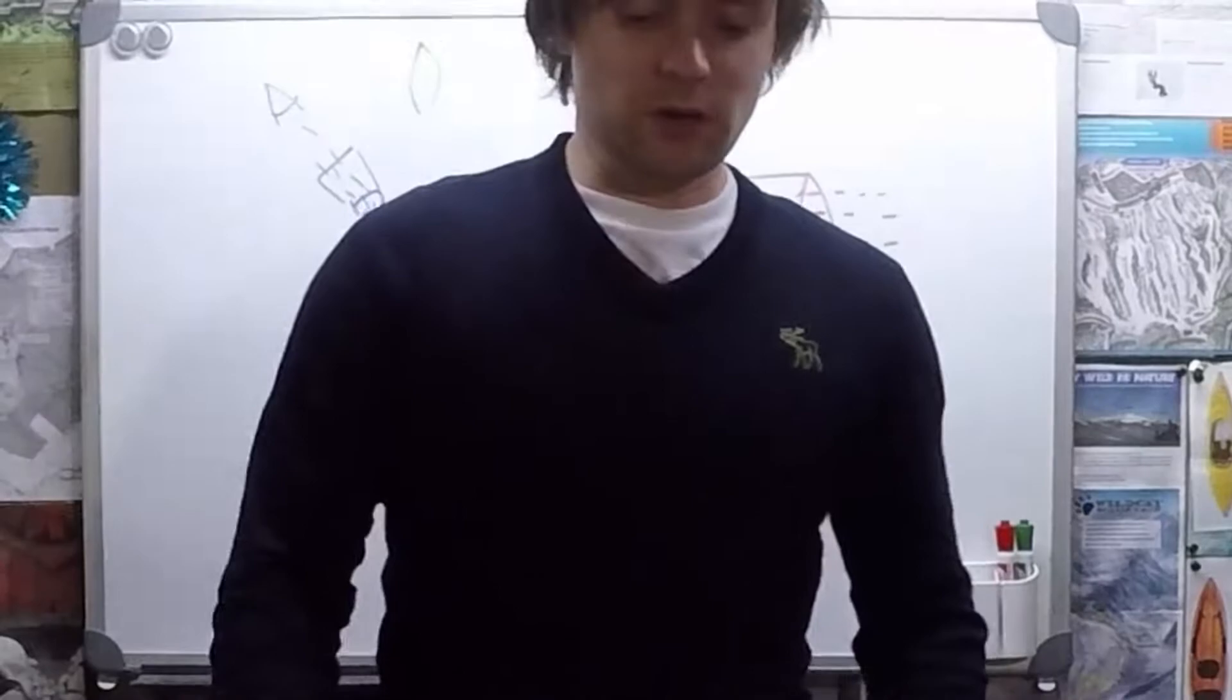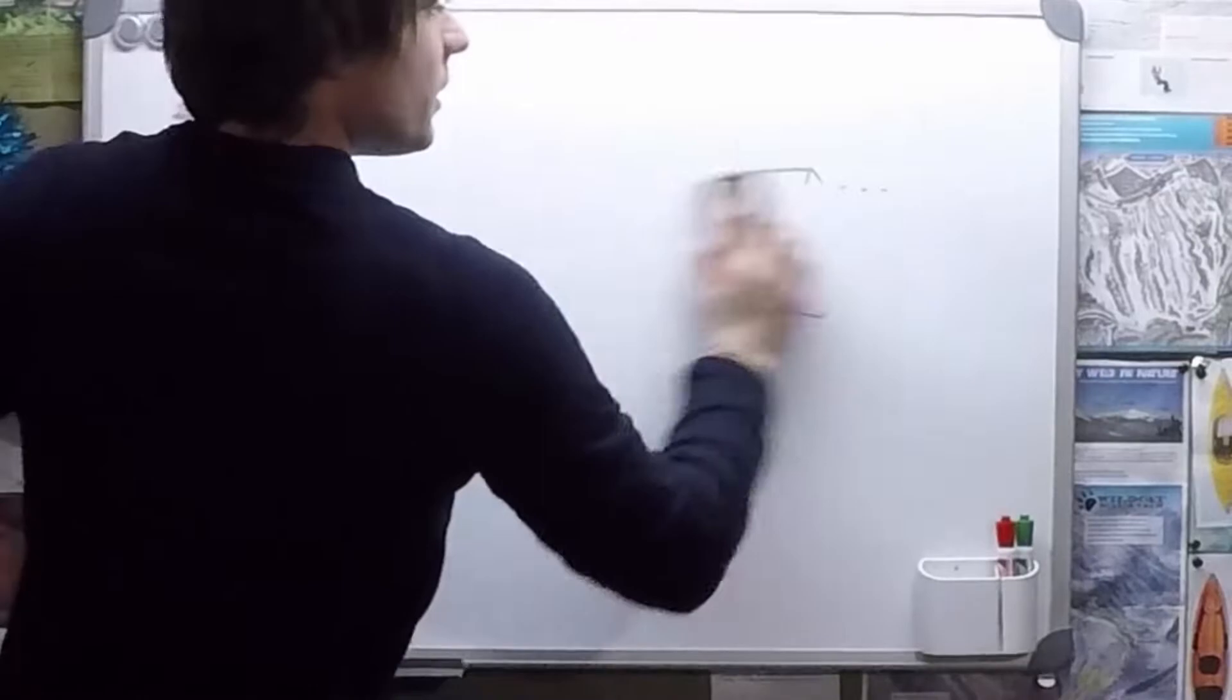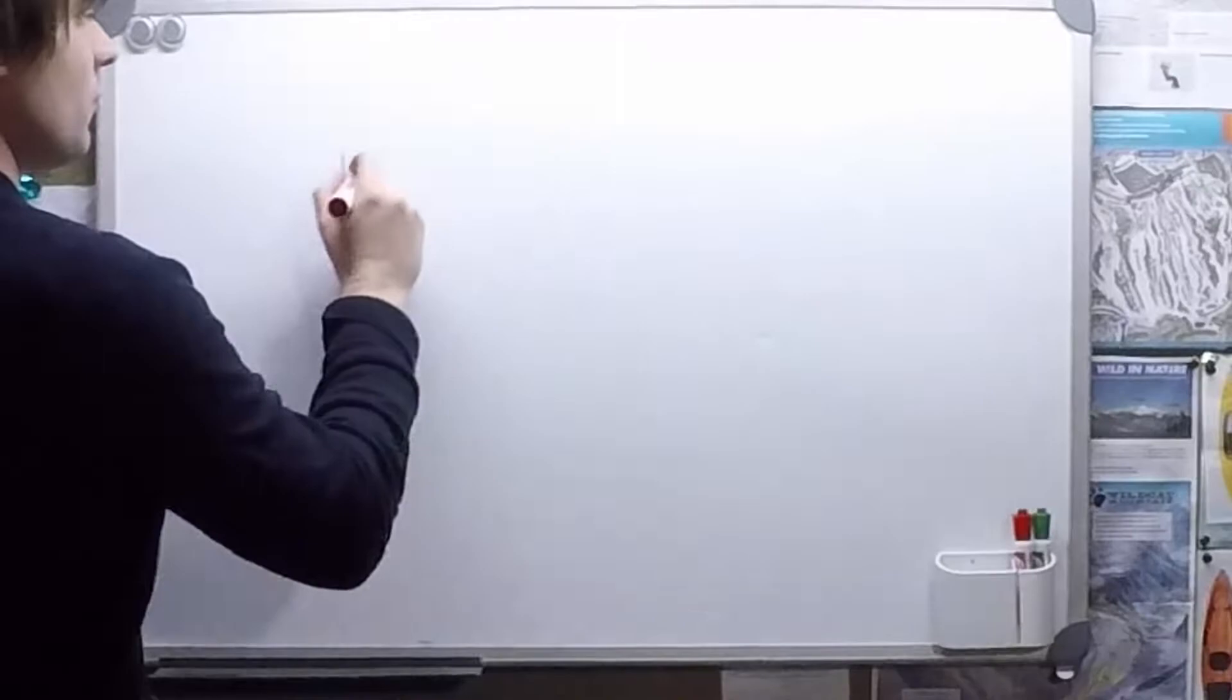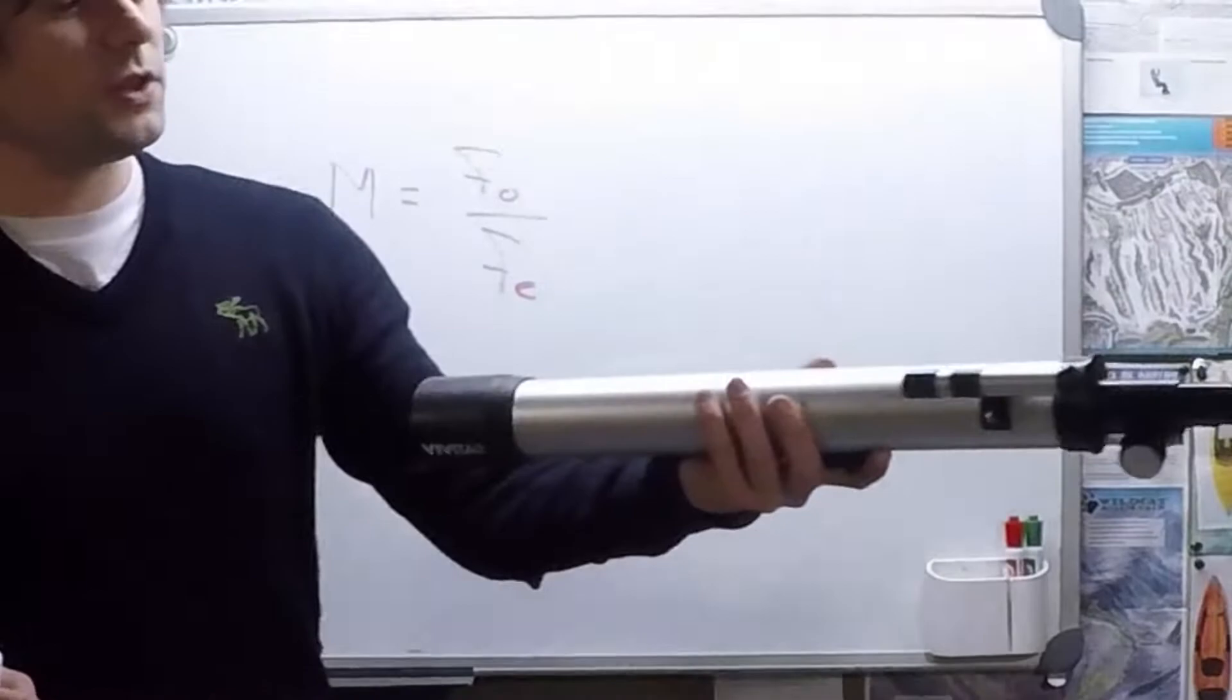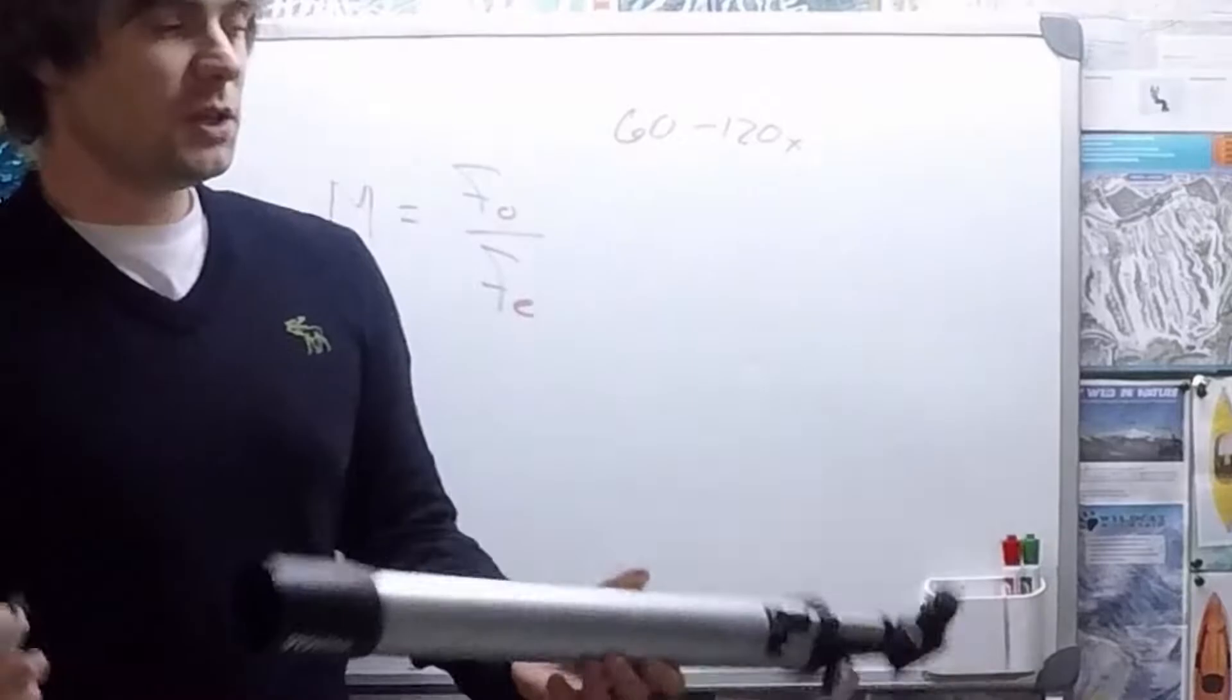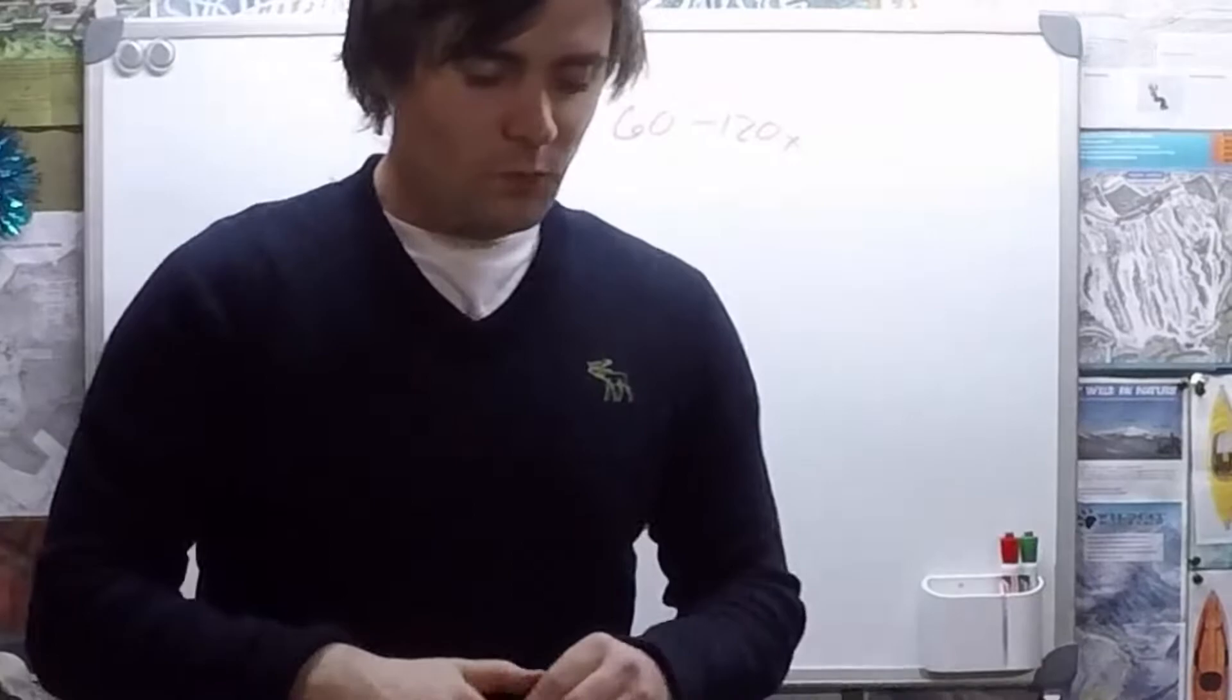Well, magnification is determined by the focal length of the objective and the focal length of the eyepiece. And we have a pretty simple equation in order to determine this. The magnification of a telescope, or a refracting telescope, is equal to the focal length of the objective over the focal length of the eyepiece. So for instance, the Vivitar telescopes, they have between 60 and 120 times magnification, depending on the eyepiece that you use in the back.